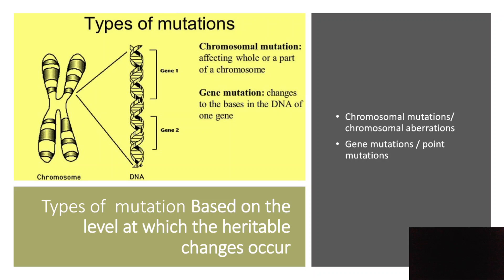So there are two types of mutations based on extent: chromosomal mutation, where the whole or part of a chromosome is affected, and gene mutation — also called point mutation — where it affects only one or a few nucleotide bases of a specific gene.